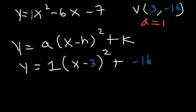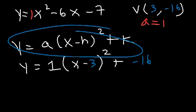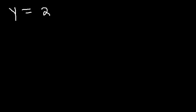So now you have two techniques for converting a quadratic equation from standard form to vertex form. You can either find the vertex and plug it into the formula, or you can use the completing the square technique. For practice, let's try another one: y is equal to 2x squared plus 8x minus 5.